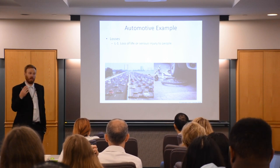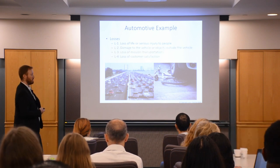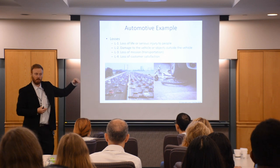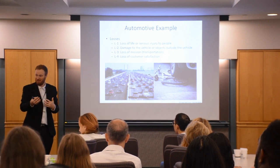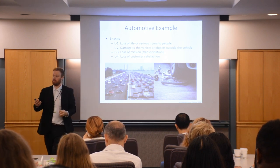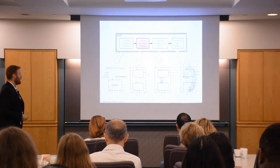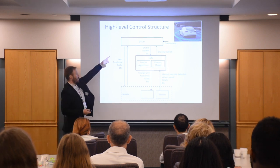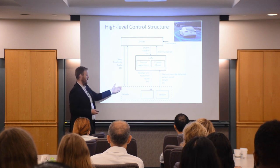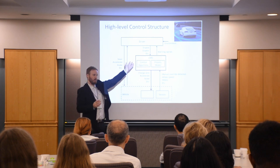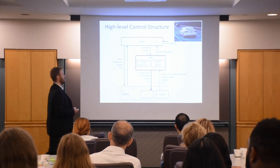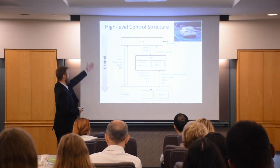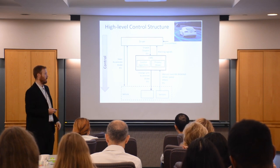We want to prevent loss of life - the traditional safety objective. But also damage to the vehicle, loss of mission efficiency, and customer satisfaction if the automation doesn't get you to your destination efficiently. In this method you can apply it not just to safety and security but to any loss. You need stakeholders to define the losses. Then we build a model - a functional control structure. Here we have a driver at the top making high-level decisions - they can execute manual commands, enable or disable the automation. The automation software can change lanes, accelerate, and brake.